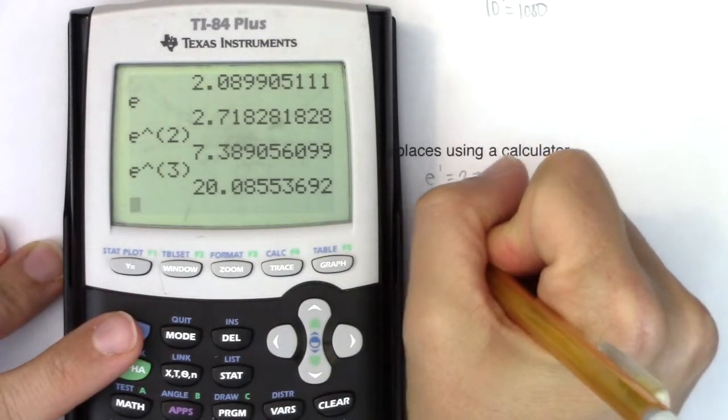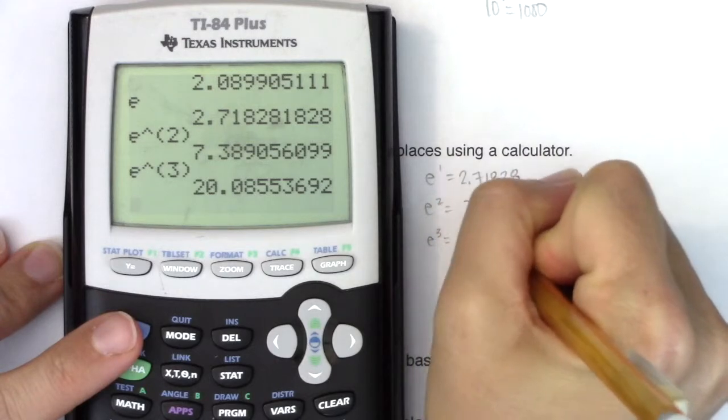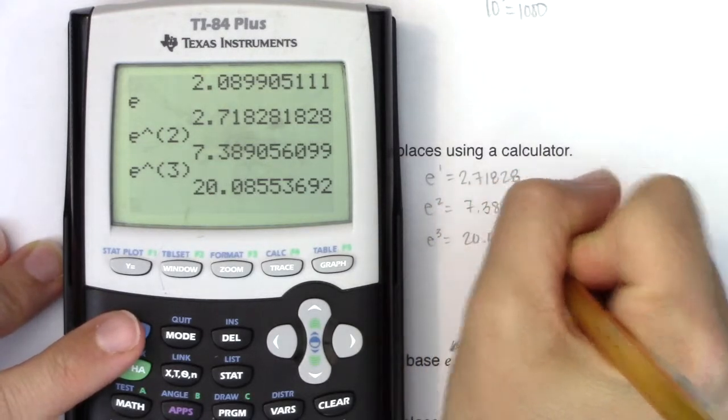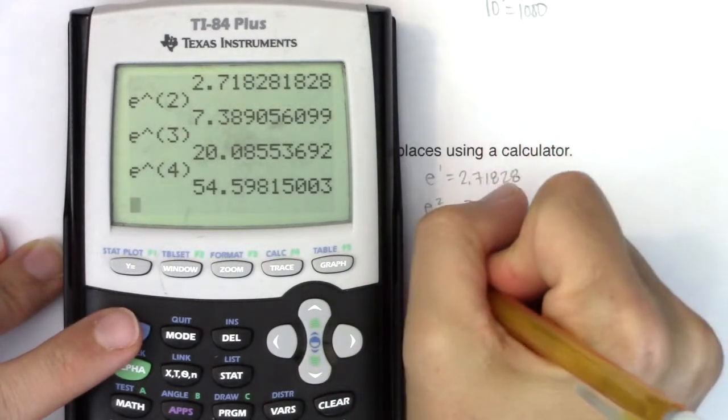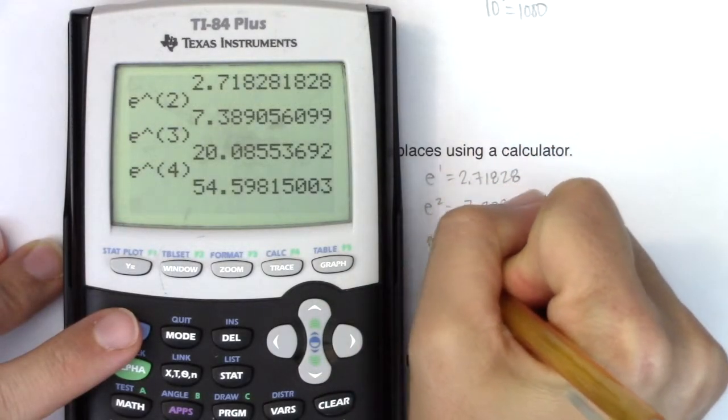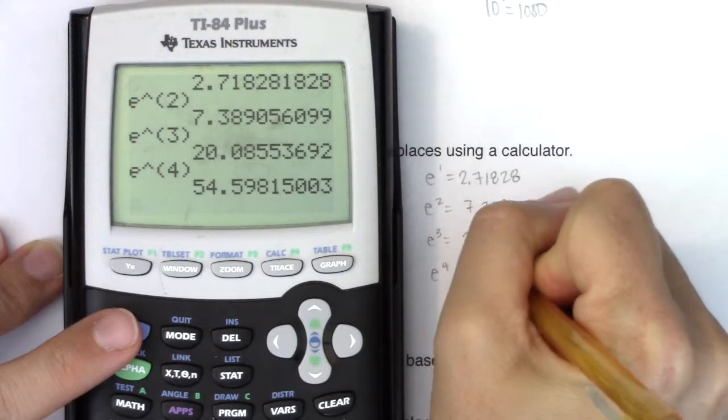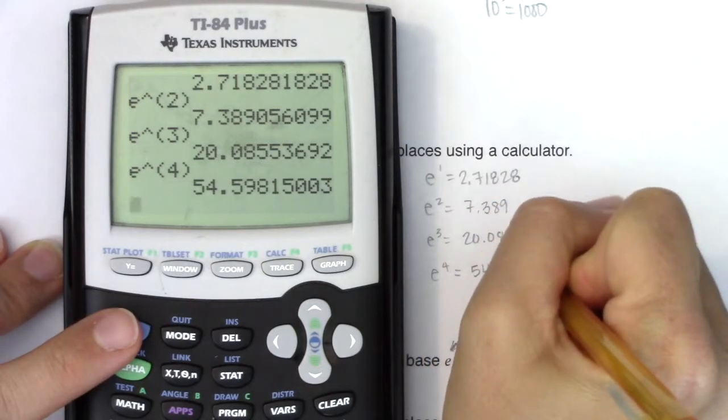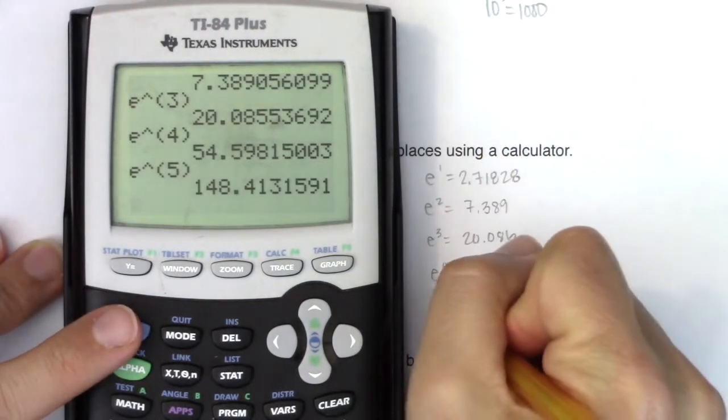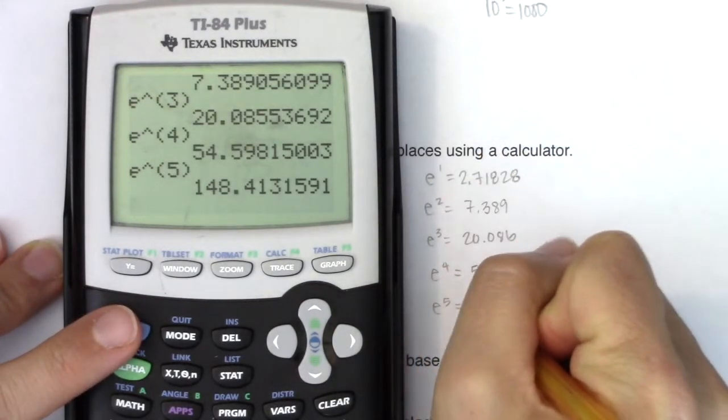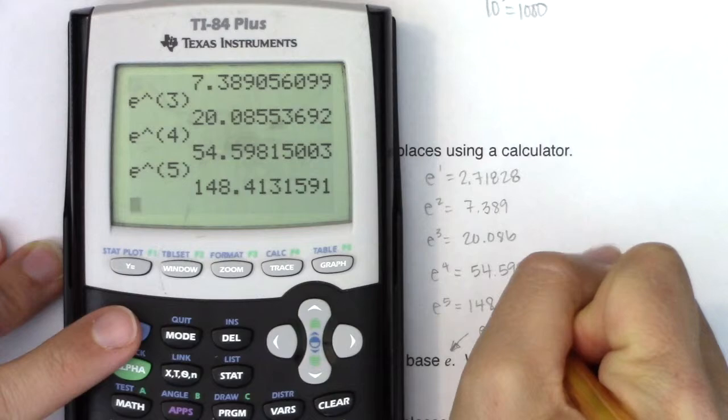That's about 20. What's E to the fourth? That is 54. We're going to get closer. I think the next one will do it. So 54.598. And just for fun, let's do E to the fifth. Yeah, that's the ticket. So we got E to the fifth equaling 148.413.